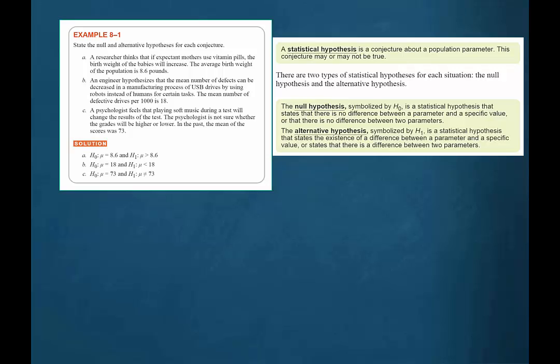The alternative hypothesis is a statistical hypothesis that states the existence of a difference between a parameter and a specific value, or states that there is a difference between two parameters. These are very technical definitions. Let's state them a little more informally.